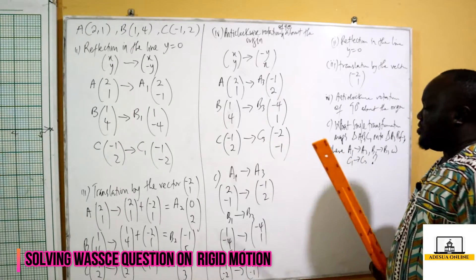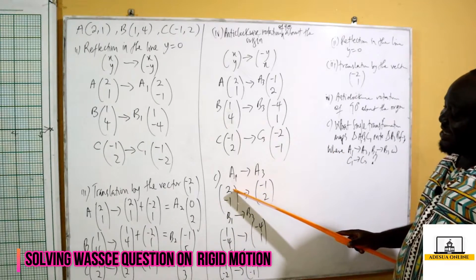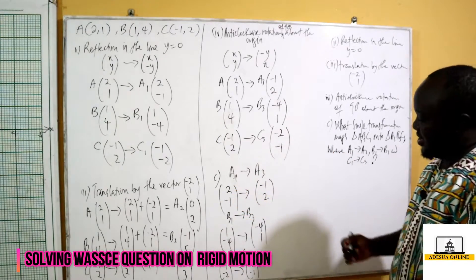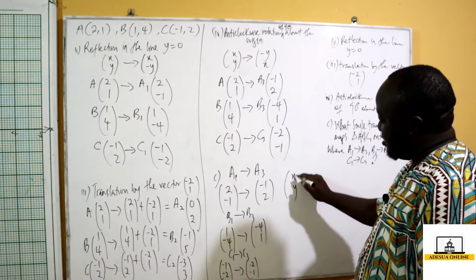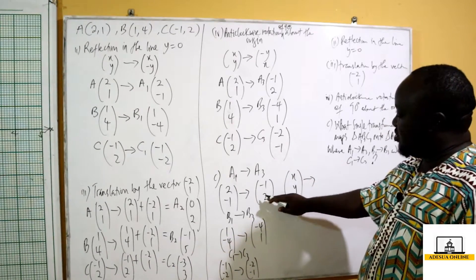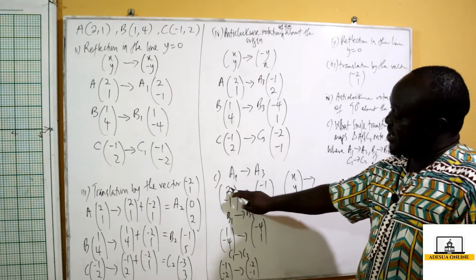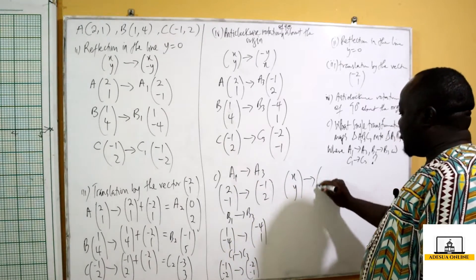Now if we watch this carefully, you realize that if this is x and this is y, our (x, y) maps onto... this goes up, this goes down, this goes up, so we have (y, x).